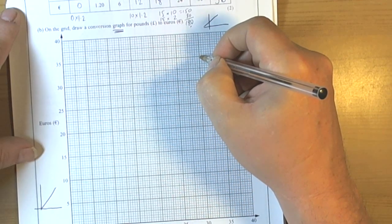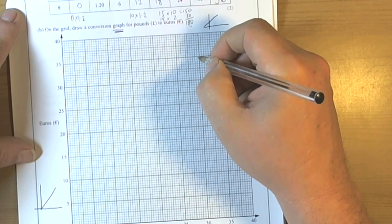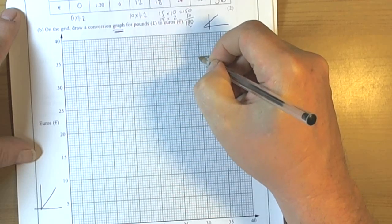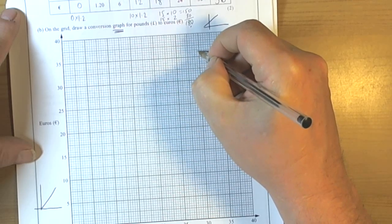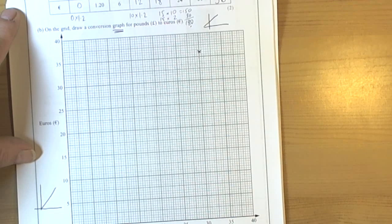Again with all graphs look at the scale. So here we've got 10 little squares for 5, so each little square must be worth a half. 5 divided by 10 is a half. So 35, 35 and a half, 36.